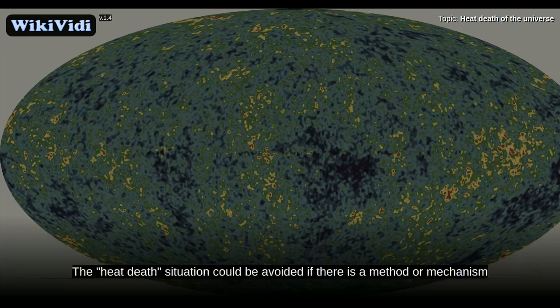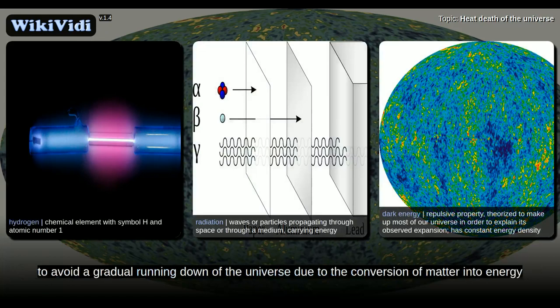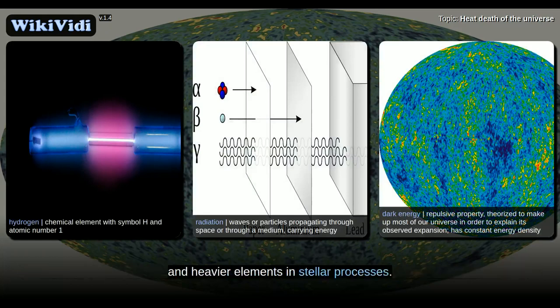The heat death situation could be avoided if there is a method or mechanism to regenerate hydrogen atoms from radiation, dark energy or other sources in order to avoid a gradual running down of the universe due to the conversion of matter into energy and heavier elements in stellar processes.